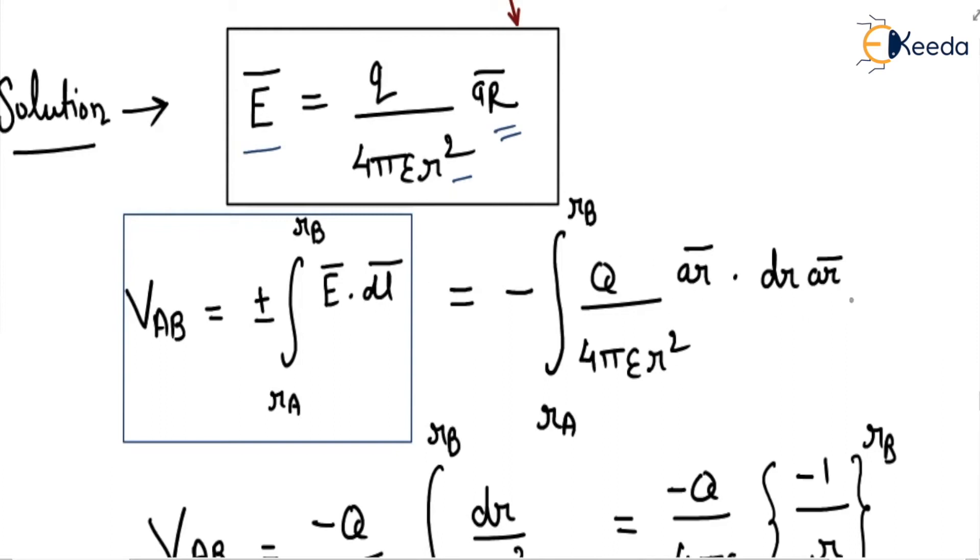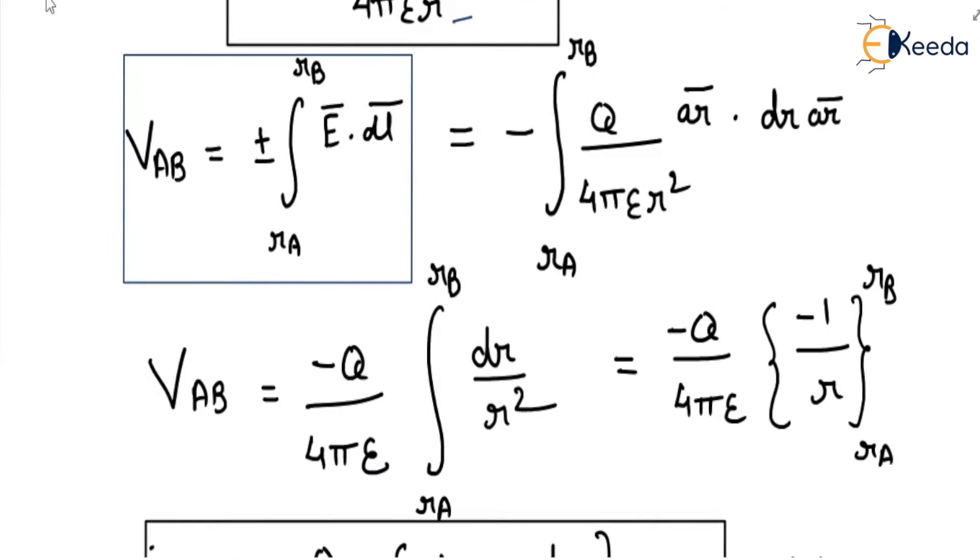Minus q/(4πε₀) we will take outside because it is a constant value, and âr dot âr is 1, so it will be dr/r². We have to integrate 1/r², and the integration is minus 1/r.